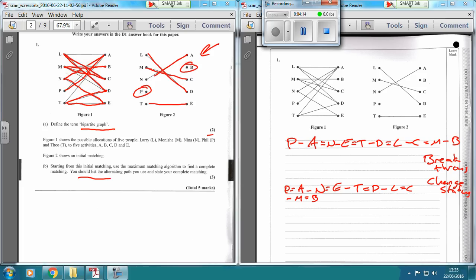And then it says you should list your alternating path which we've done here, easy alternating paths, and then state your complete matching. So you write down that complete matching is, so L is now connected to C and M, so I'll go down to L is now connected to C,